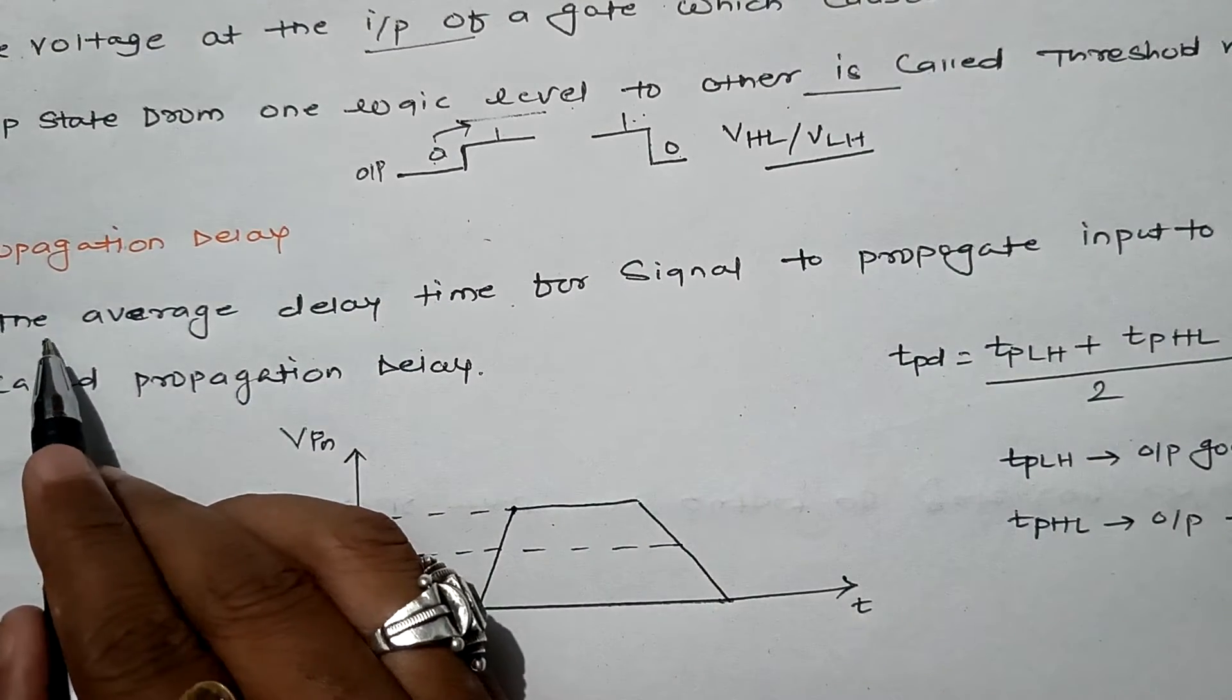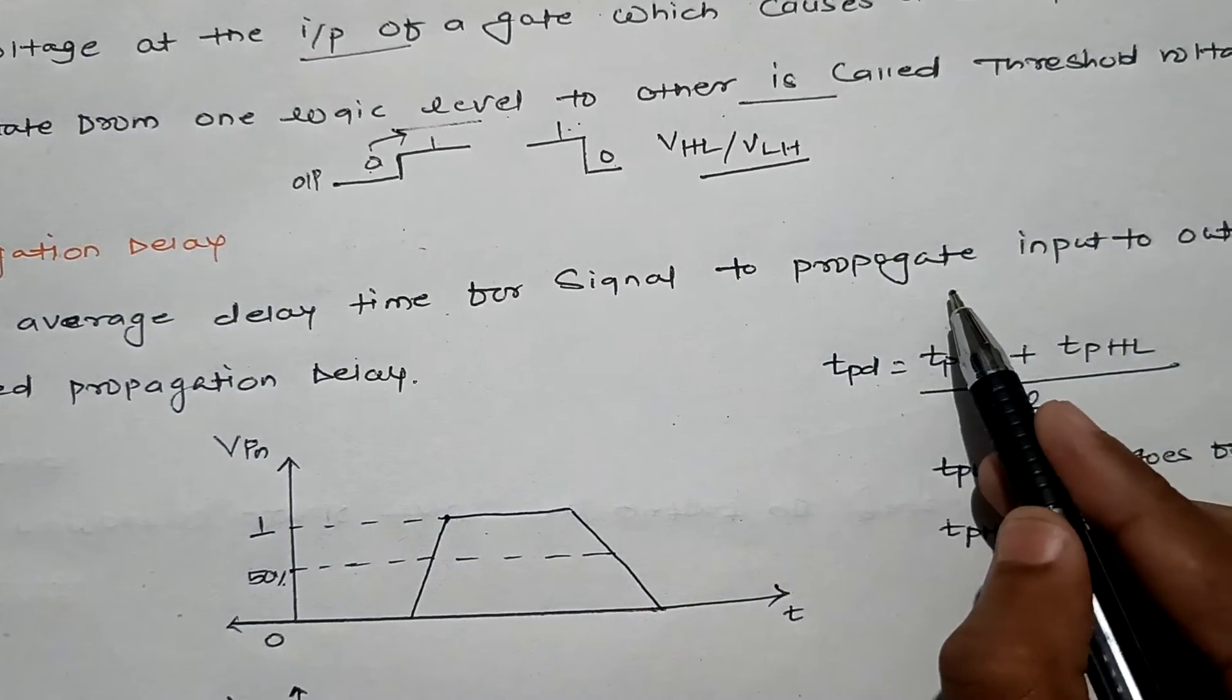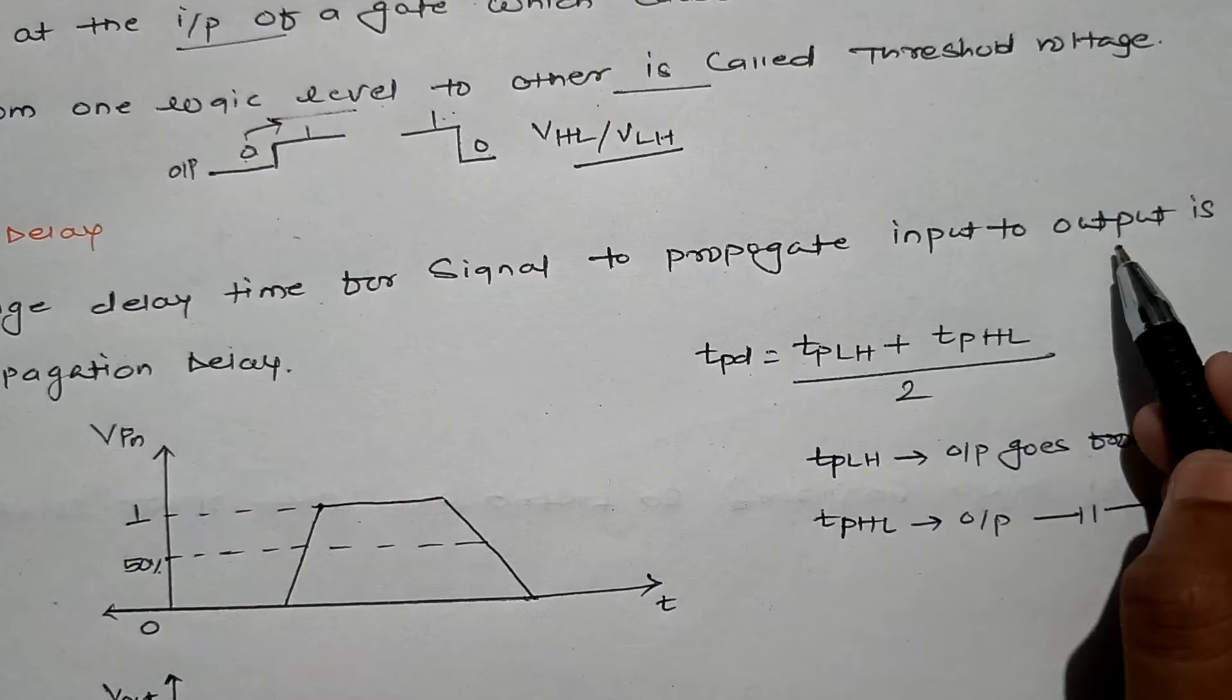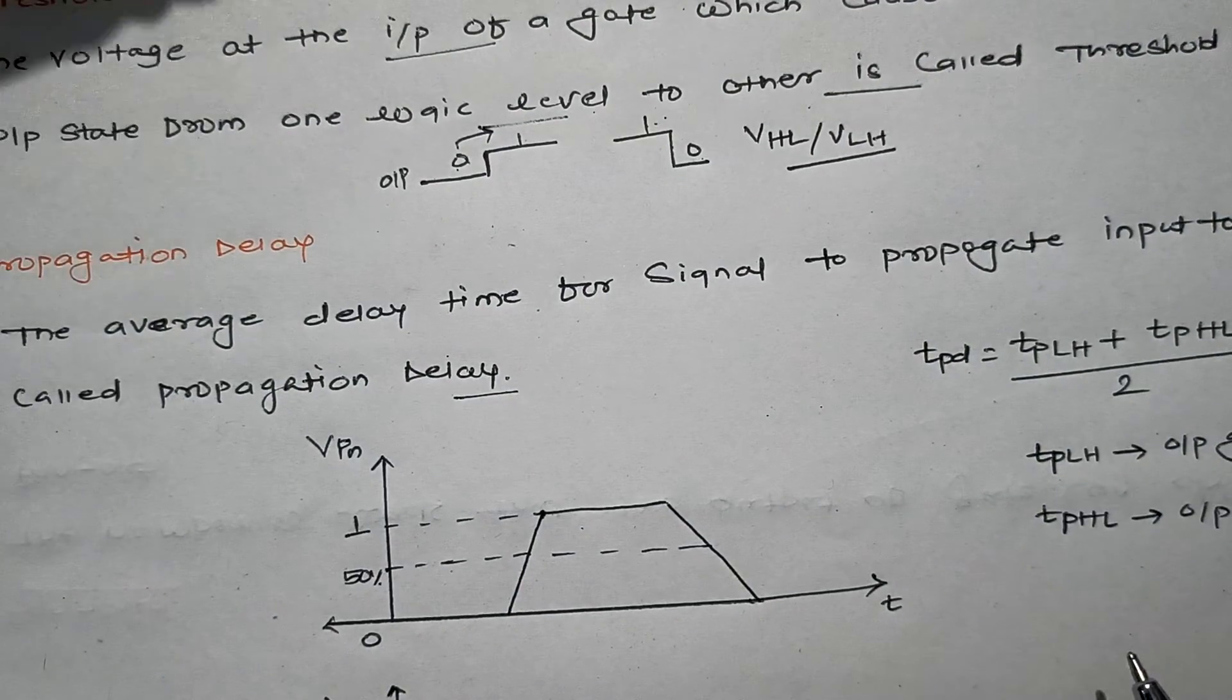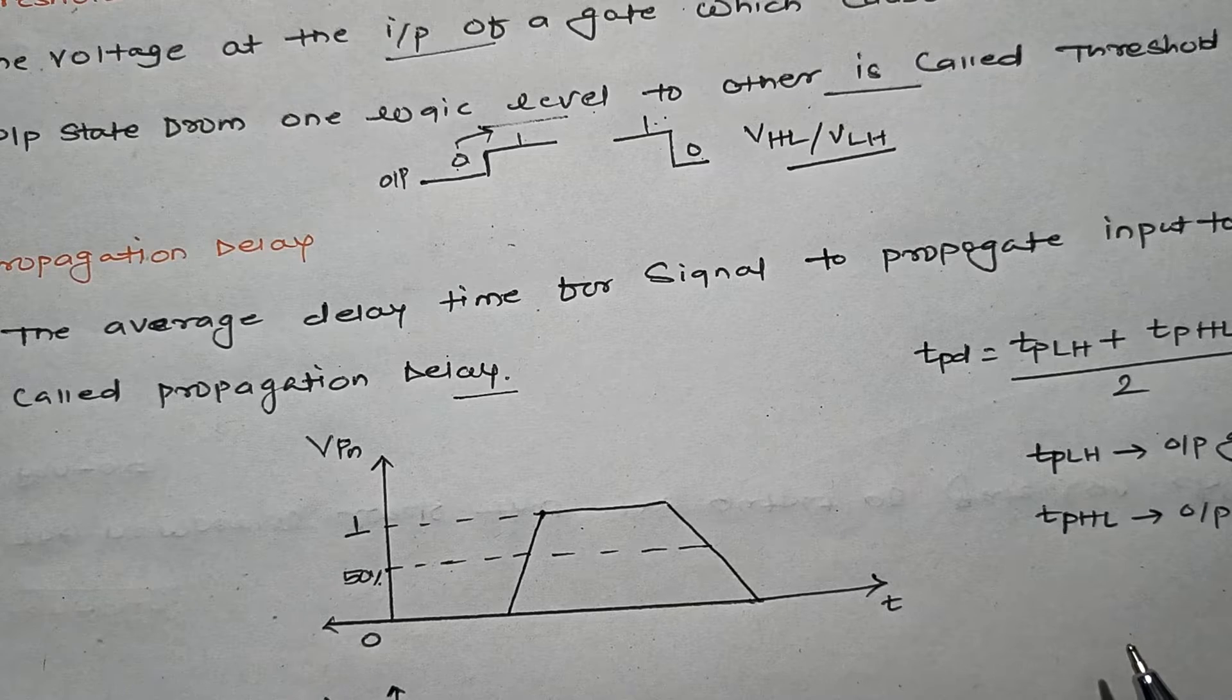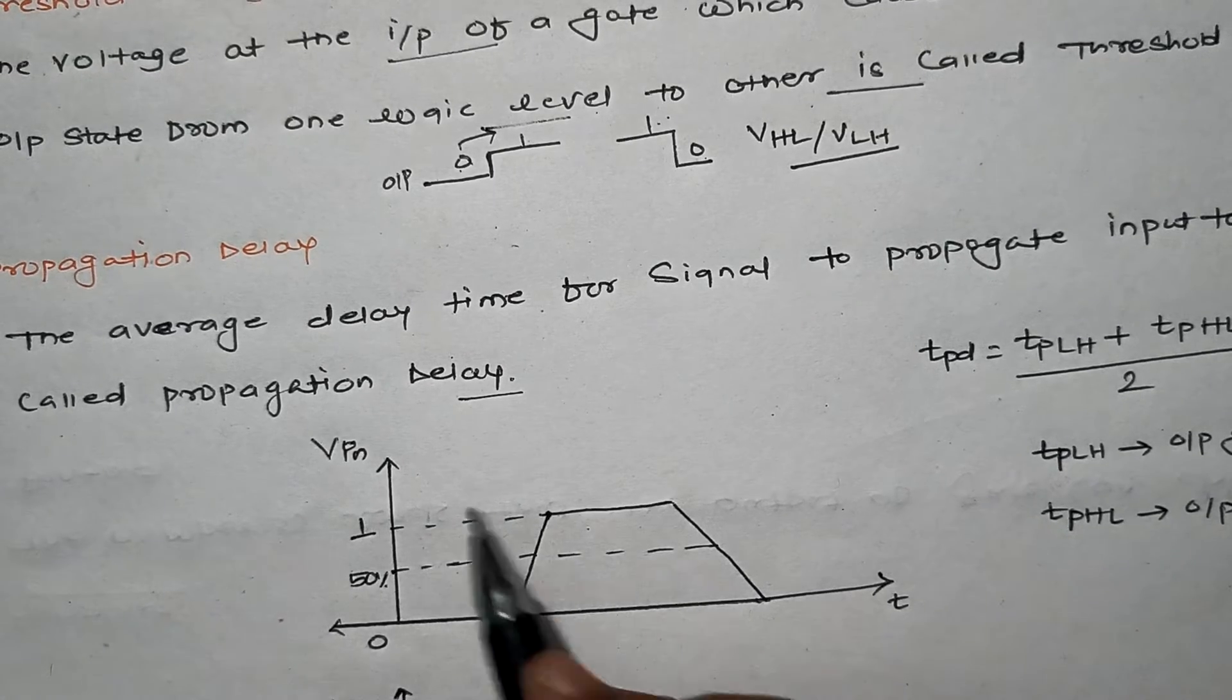Propagation delay is defined as the average delay time required for the signal to propagate from input to the output. That means the average amount of time taken by signal to reach the output from input is called propagation delay.